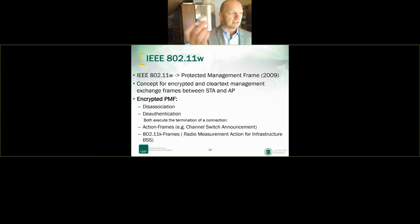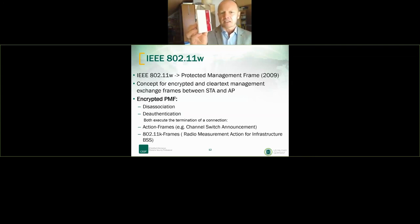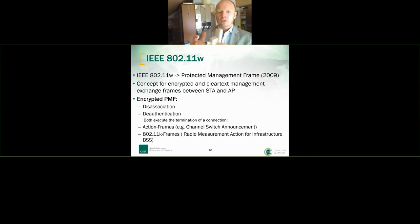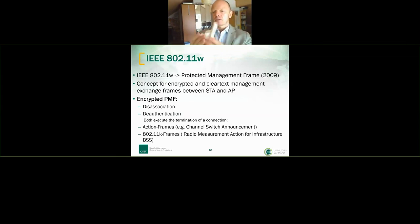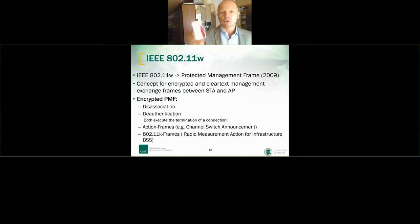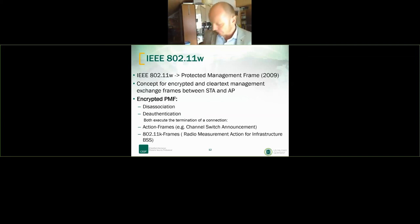Action frames are used when someone wants to switch channels — the station or access point communicates this. The 11K frames contain information about radio parameters, frequencies, and so on. If these frames are not encrypted, they are easy for an external intruder or hacker to sniff and manipulate.